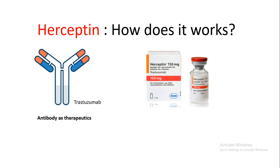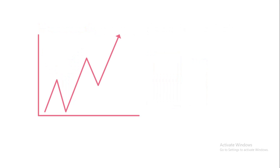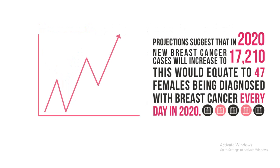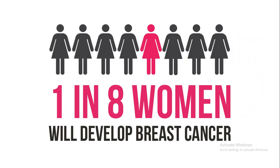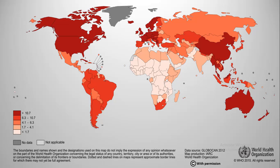The incidence of breast cancer is increasing day by day. Statisticians predict that almost 47% of females would be diagnosed with breast cancer around 2020. In the US population, every one in eight women is affected by breast cancer or is at high risk of getting affected. WHO published a map of the most at-risk zones where breast cancer is prevalent — a huge amount of the US population, Australia, and a large part of Asia and Europe is affected.